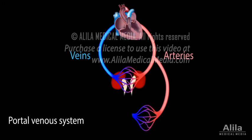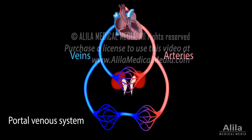A portal venous system is a deviation from this configuration. It occurs when a capillary bed drains into another capillary bed before going back to the heart. It's a venous system because the vessels that connect the two capillary beds are veins, and they contain deoxygenated blood.